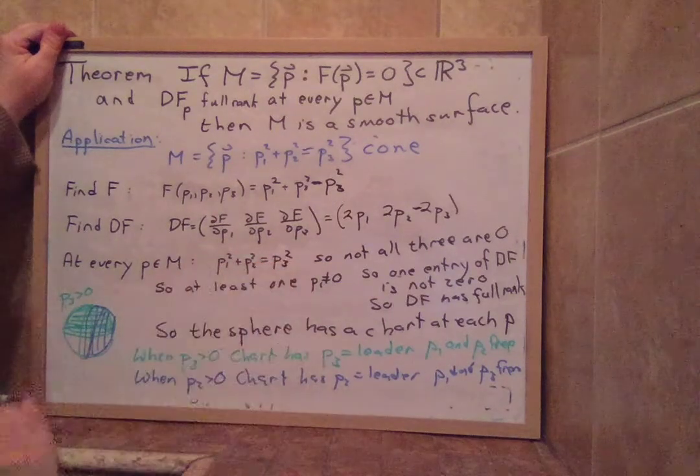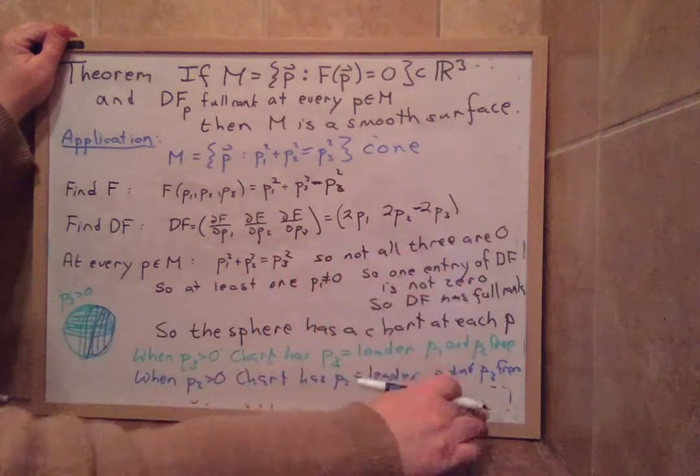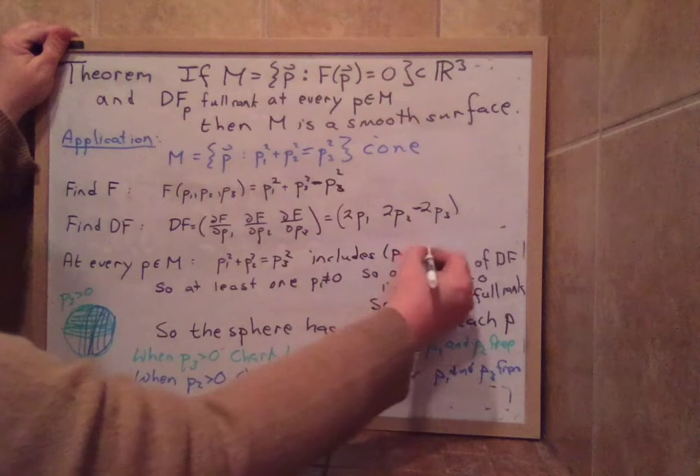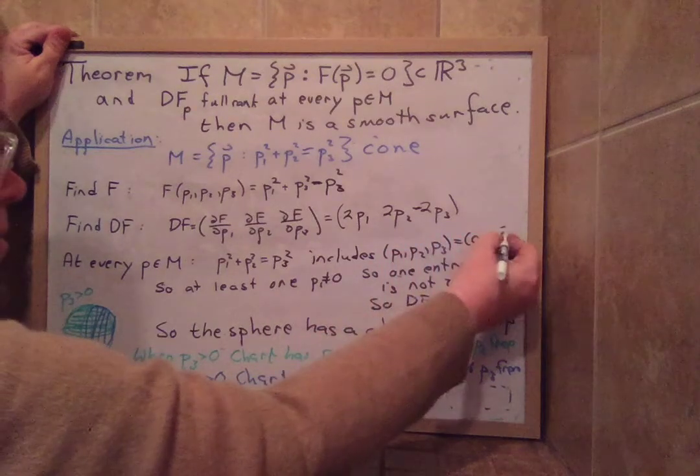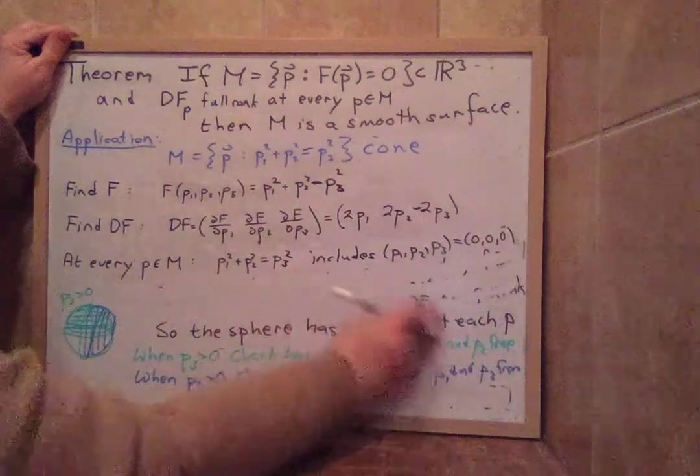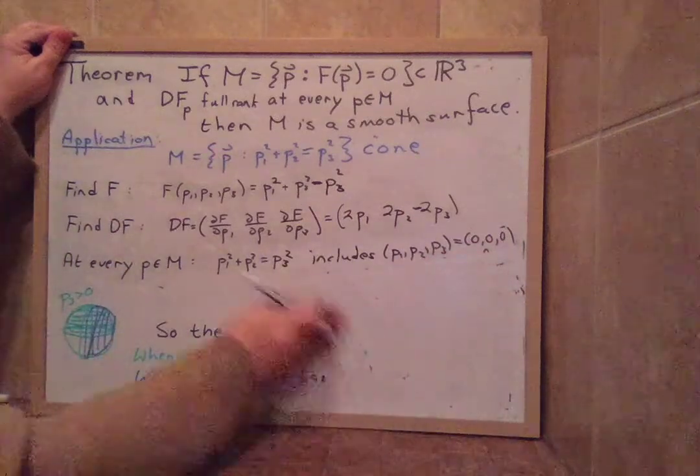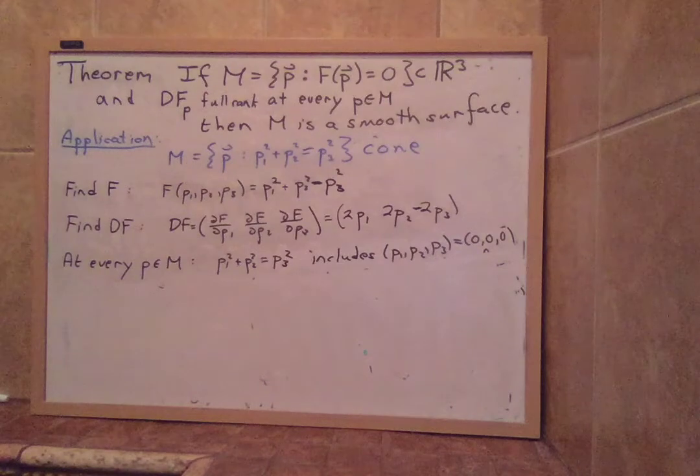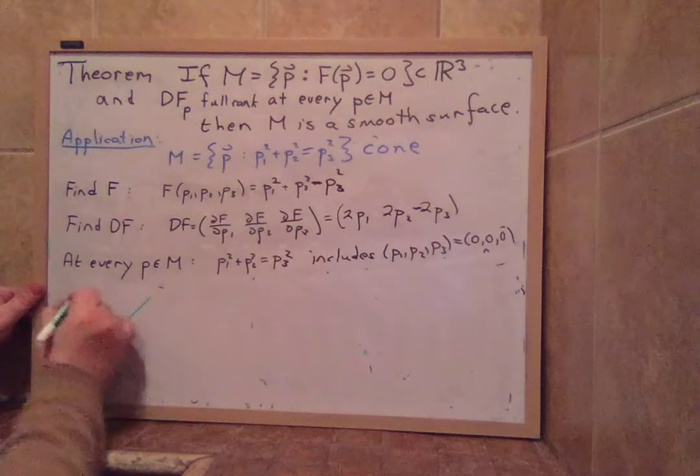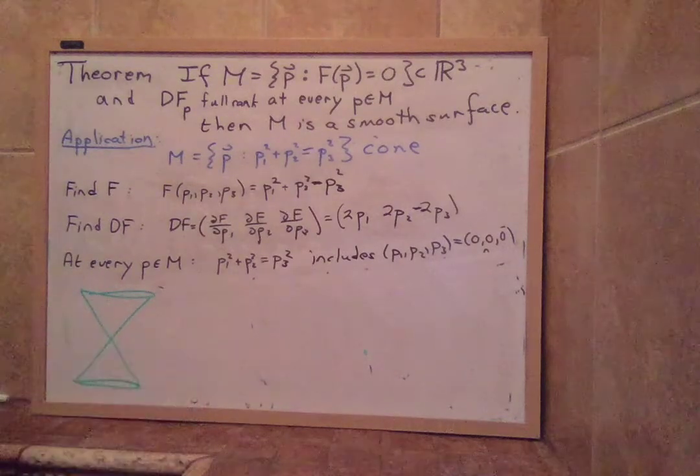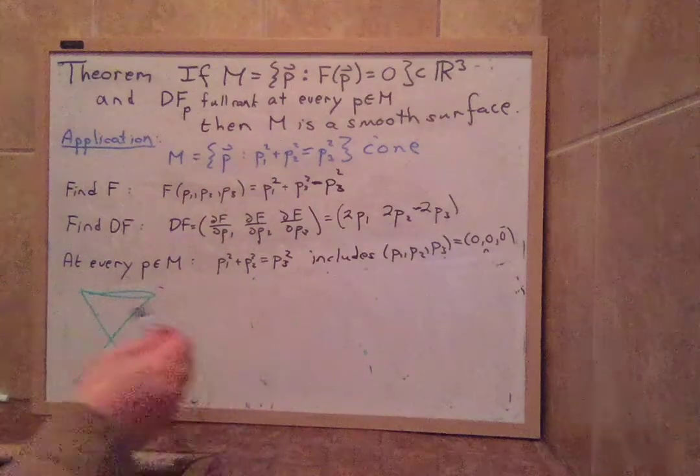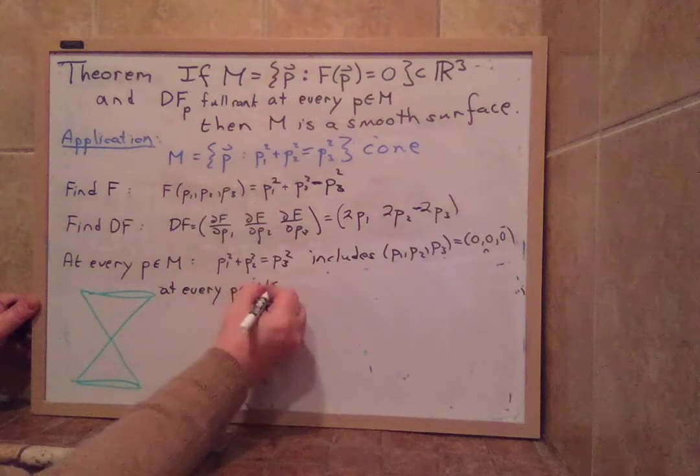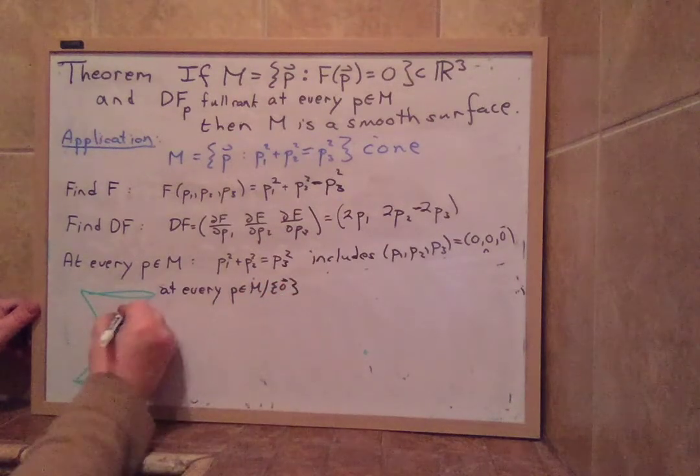And then the real problem is that at every point p in M, we have p1 squared plus p2 squared equal p3 squared. This includes p1, p2, p3 equal to 0, 0, 0. All right, so now all the stuff we've included for the sphere is not going to work. Let me draw the cone so you can see what's happening here. And when p is not 0, so at every p, at every p in M, taking away the point 0, if I avoid 0,